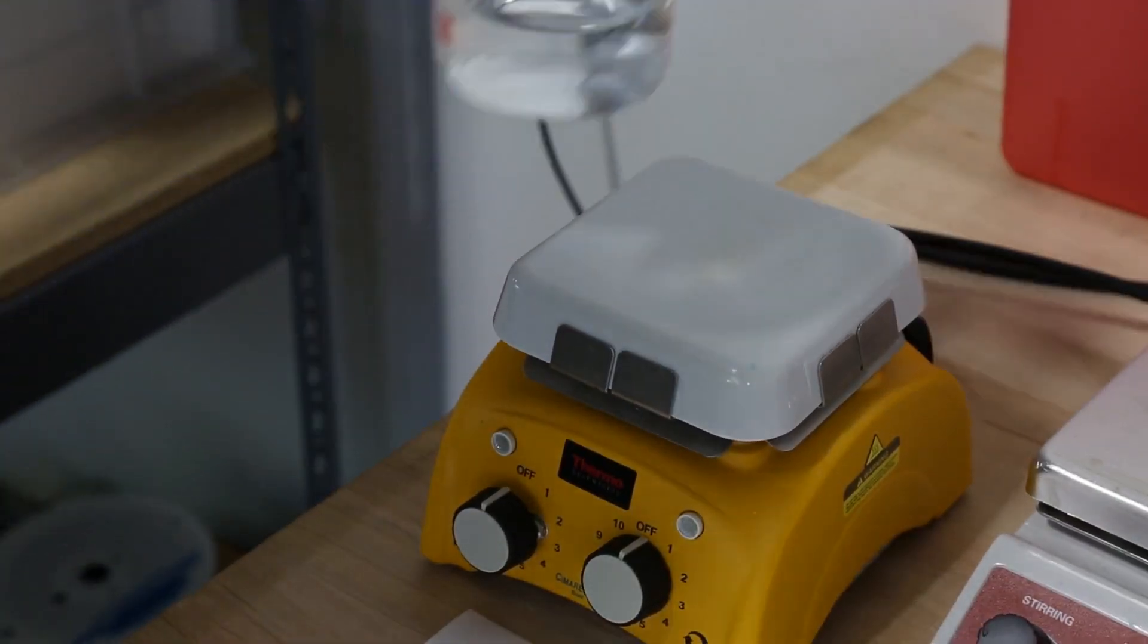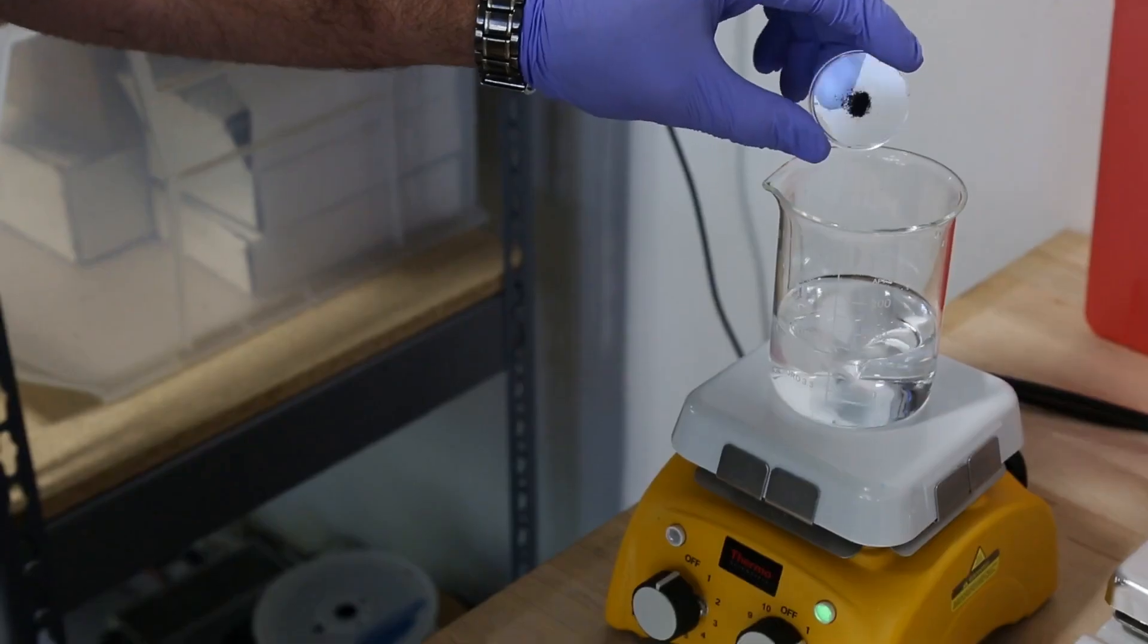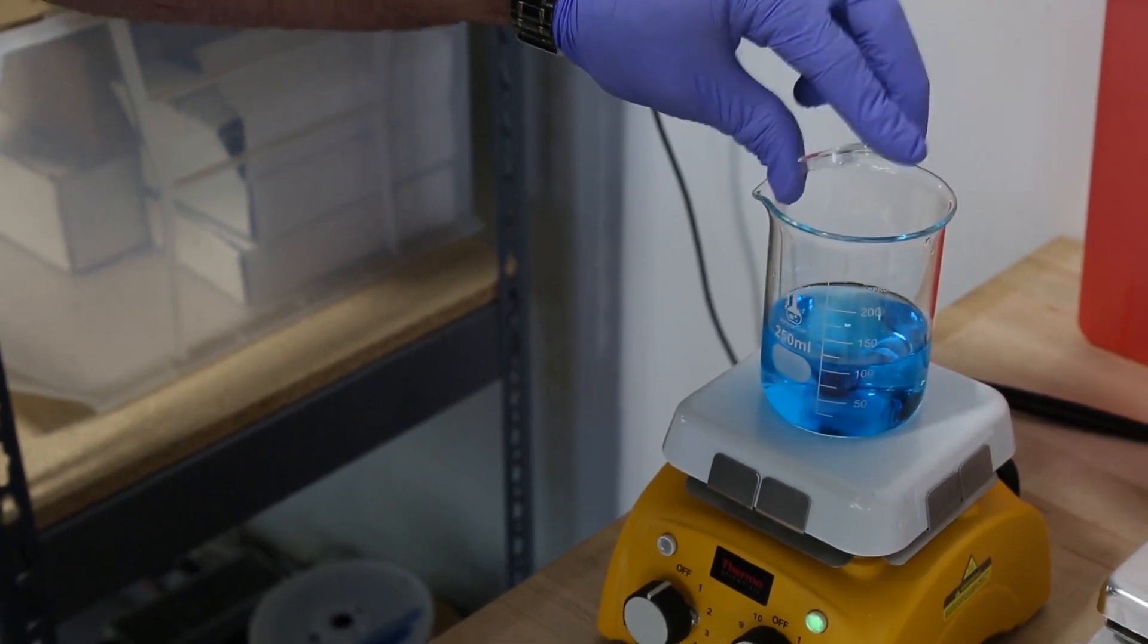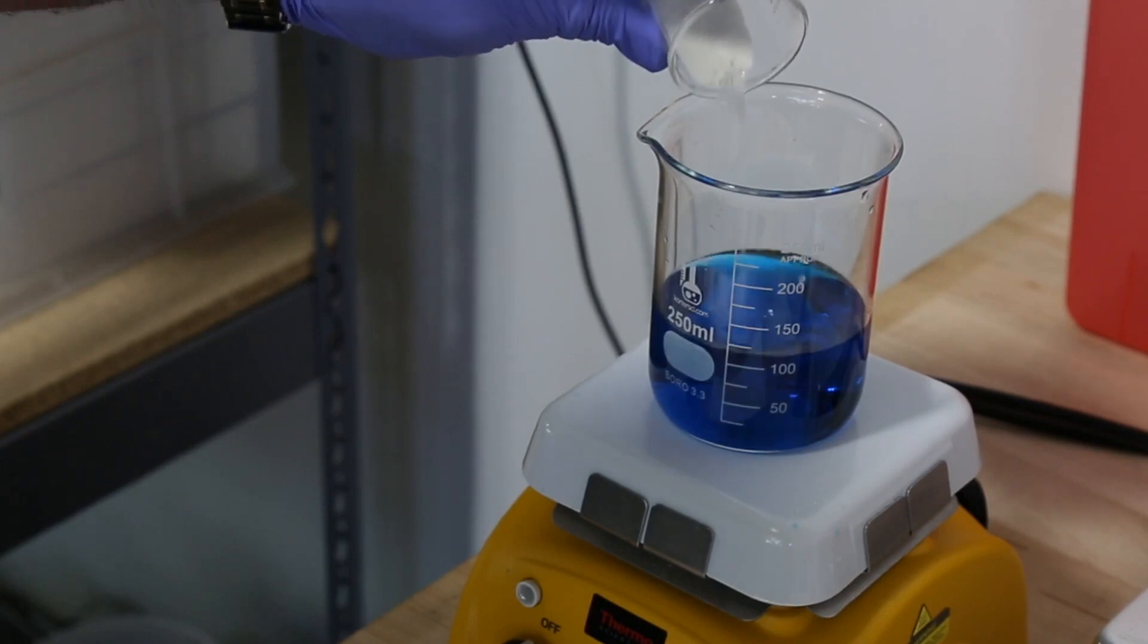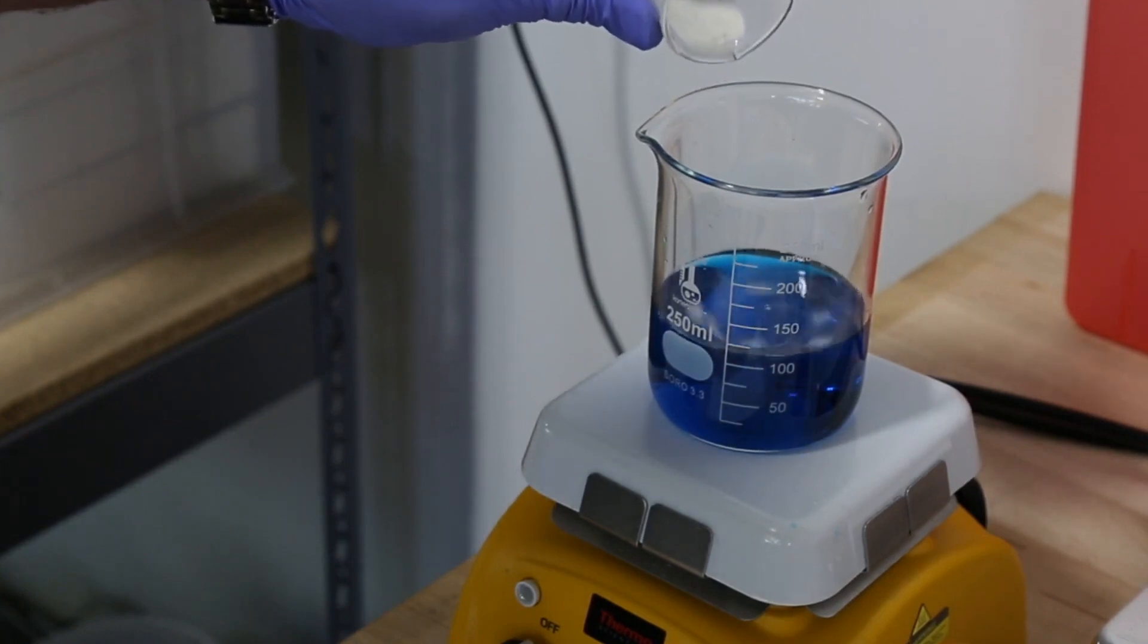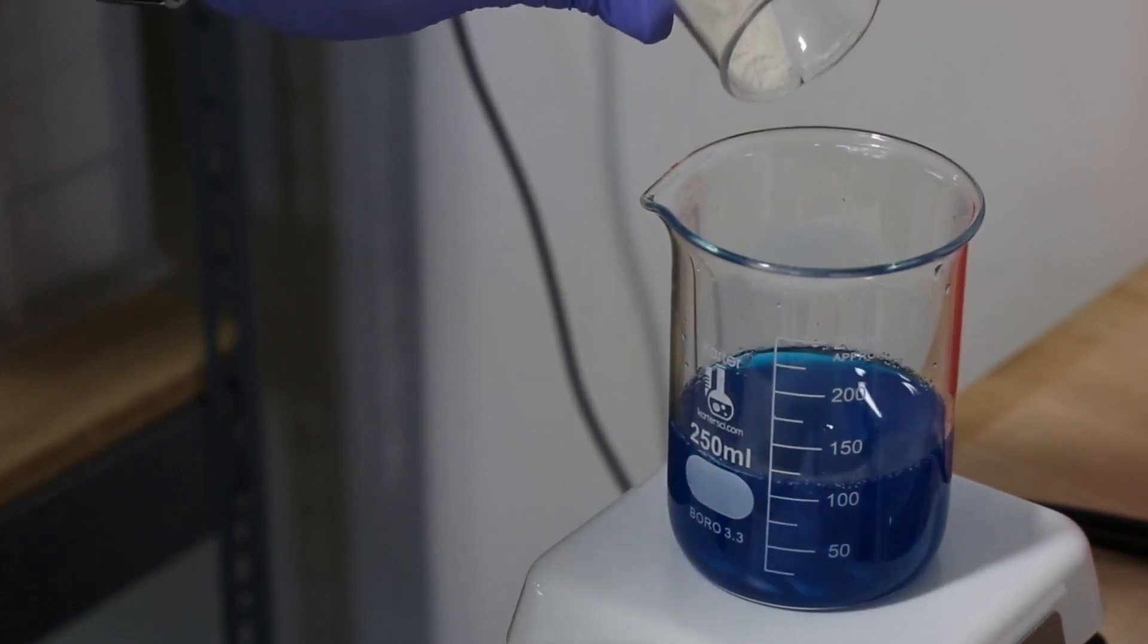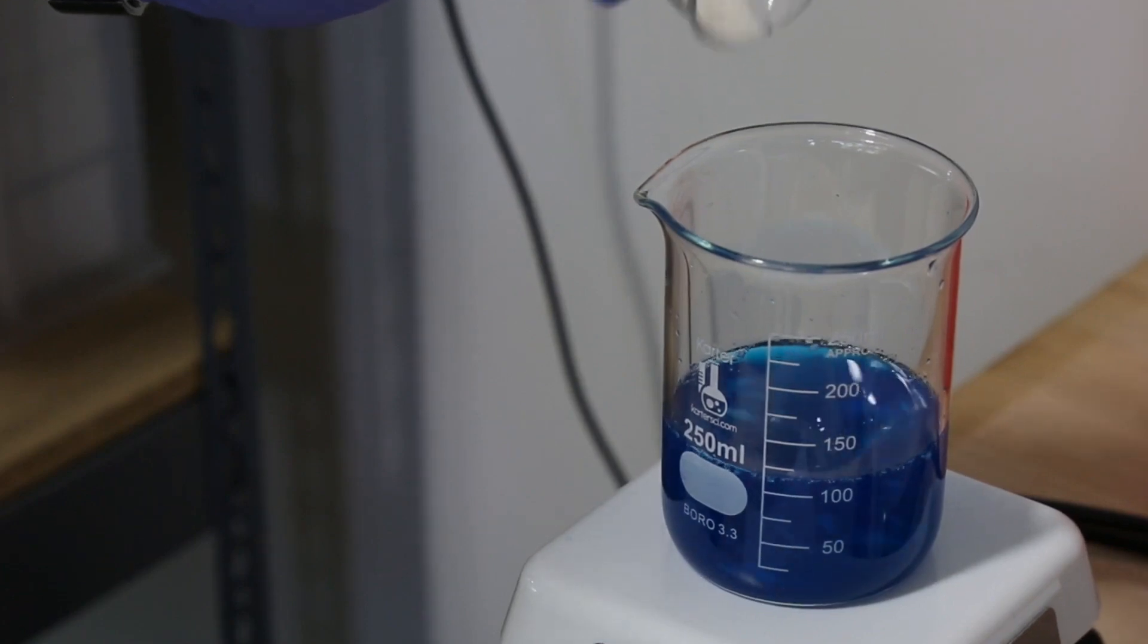So we've got our 98 milliliters of deionized water with a magnetic stirrer. Then we're gonna add our 0.02 grams of Alcyon blue dye, and this stuff is gonna make it really blue really fast. And then we're gonna slowly add our 2 grams of sodium alginate powder. Because the sodium alginate wants to clump together, we're gonna have to slowly add it and mix it for a few hours so that it reaches a consistent viscosity.